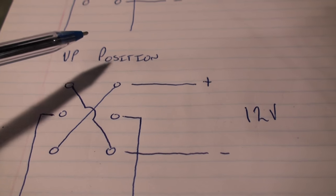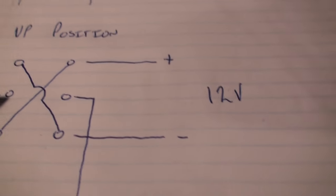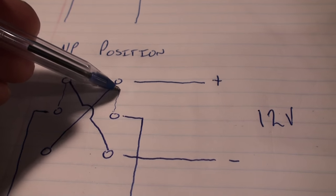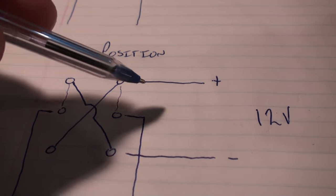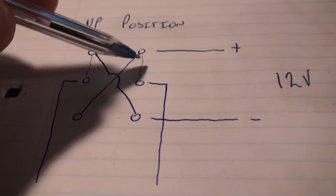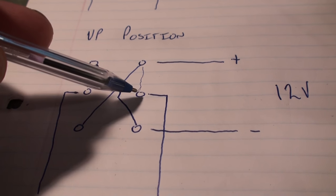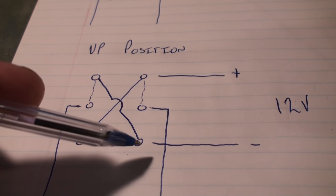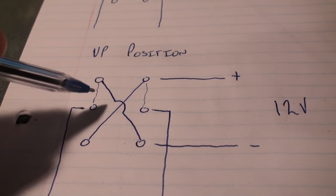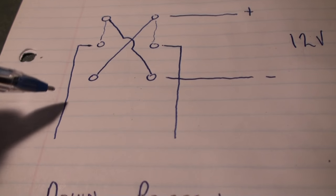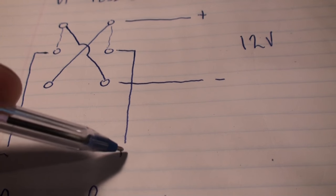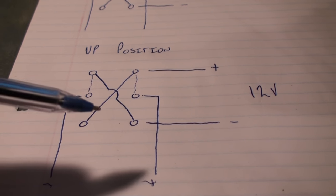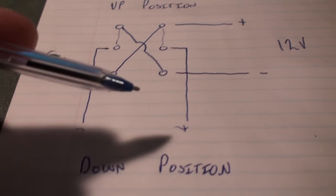Now, in the up position, what happens is we connect these two together. And you can see that the positive is connected to this terminal, to this middle terminal which makes this side positive. And the negative, which is coming in here, goes and jumps across, comes out this side. So we have negative and positive. So that's when the switch is in the up position, that's the polarity there.